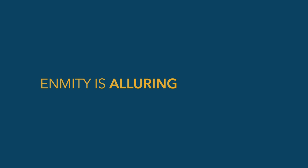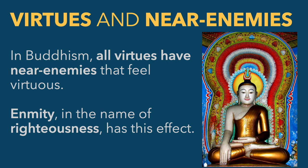Enmity is also alluring — it draws us in, it's attractive and enticing, and we can fall prey to it. There's a great concept from Buddhism that says for all virtues that exist, there are far enemies — things that stand in stark opposition. But there are also near enemies for virtues, which are vices that feel like virtues. Enmity is a great example of a vice that feels like a virtue, because if you are righteously angry, you emphasize the righteousness part and tend to ignore the anger part. In this sense, you can think of righteous enmity as a near enemy of virtues.